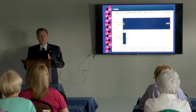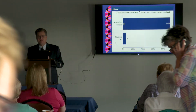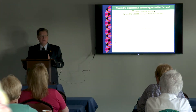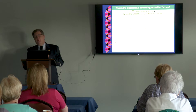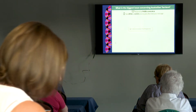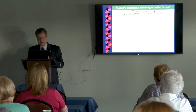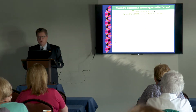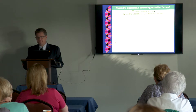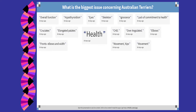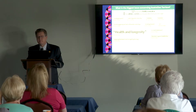The next poll question is free-form — you're going to type in an answer. The question is: what is the biggest issue concerning Australian Terriers? Primarily about breeding and being an Australian Terrier breeder and owner. The responses coming in include: small breed pool, lack of genetic diversity, small gene pool, diabetes, shrinking gene pool, lack of breeders and dogs, health and longevity, maintaining a good healthy line, and consistency in type.